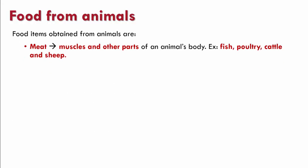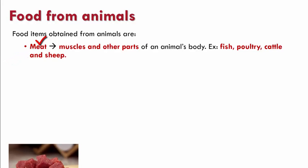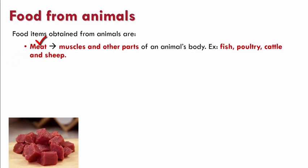Let us now find out what foods are obtained from animals. First, we have meat, which refers to the muscles and other parts of an animal's body that we eat. We may get meat from fish, poultry, cattle and sheep. Next, we have eggs, which are obtained from hens, ducks and fish.